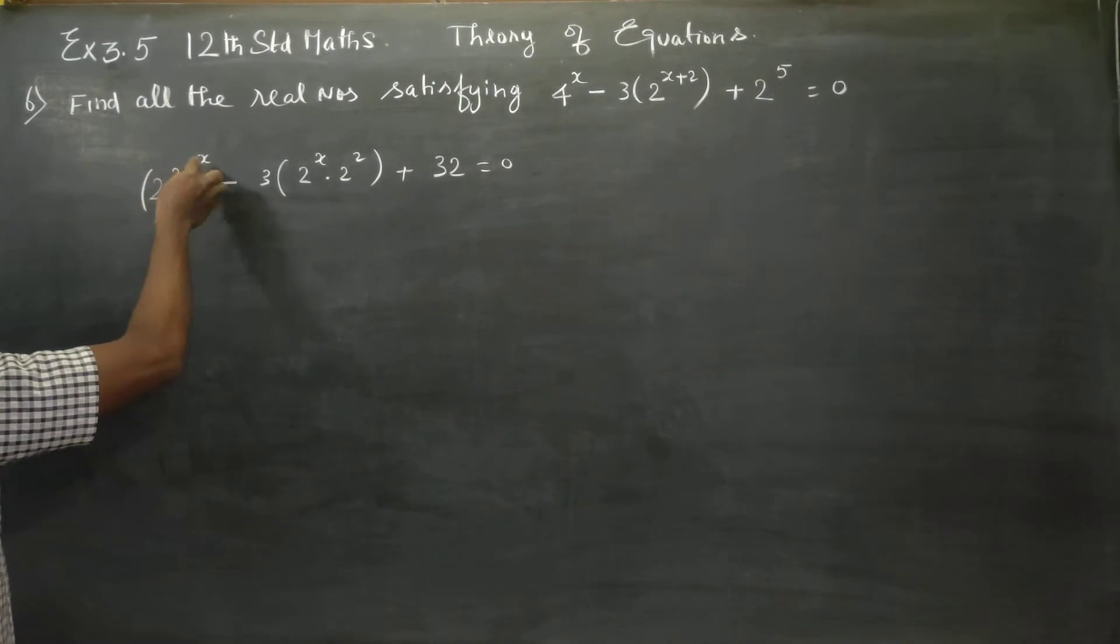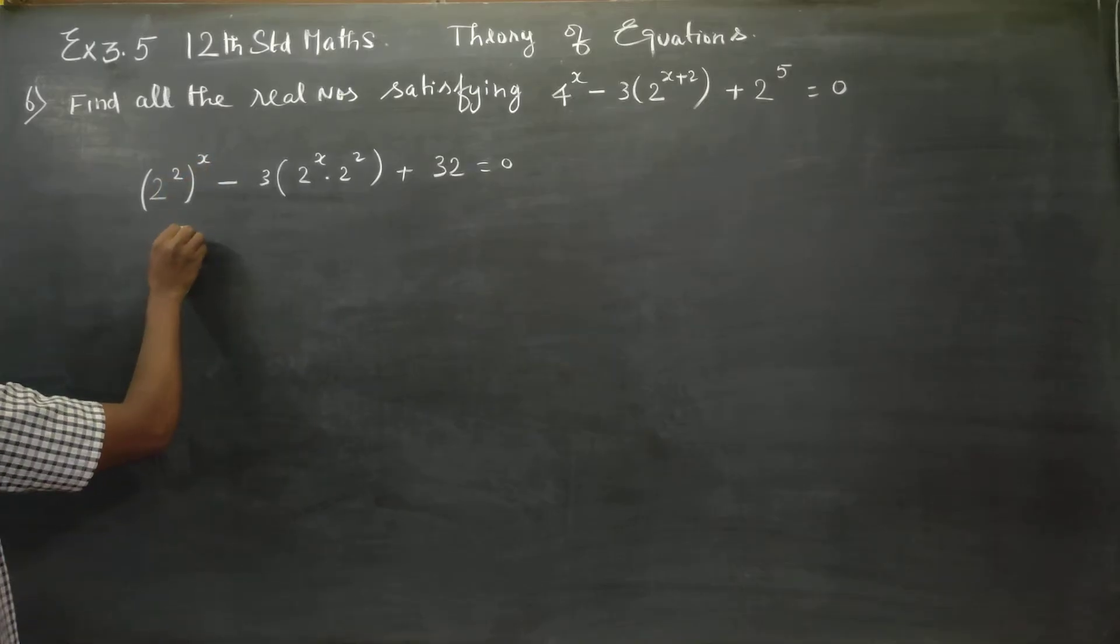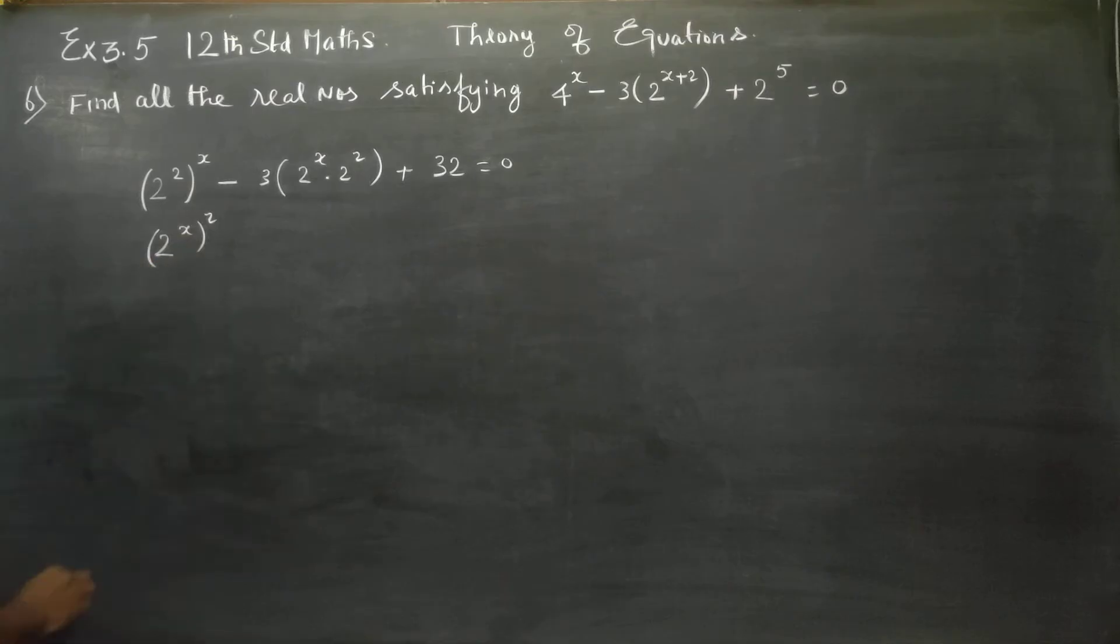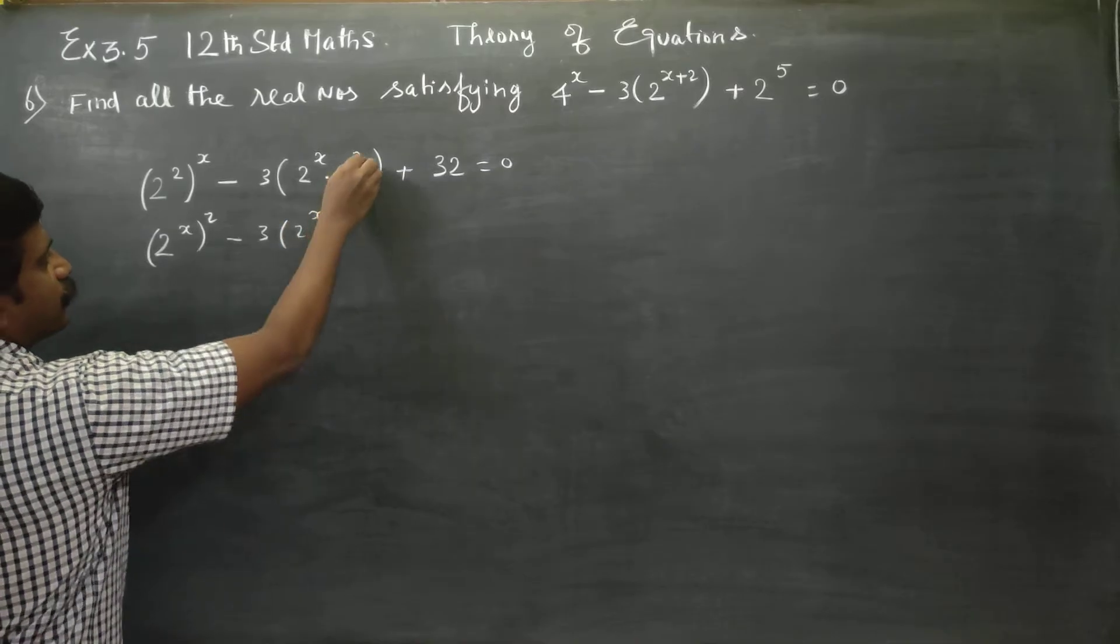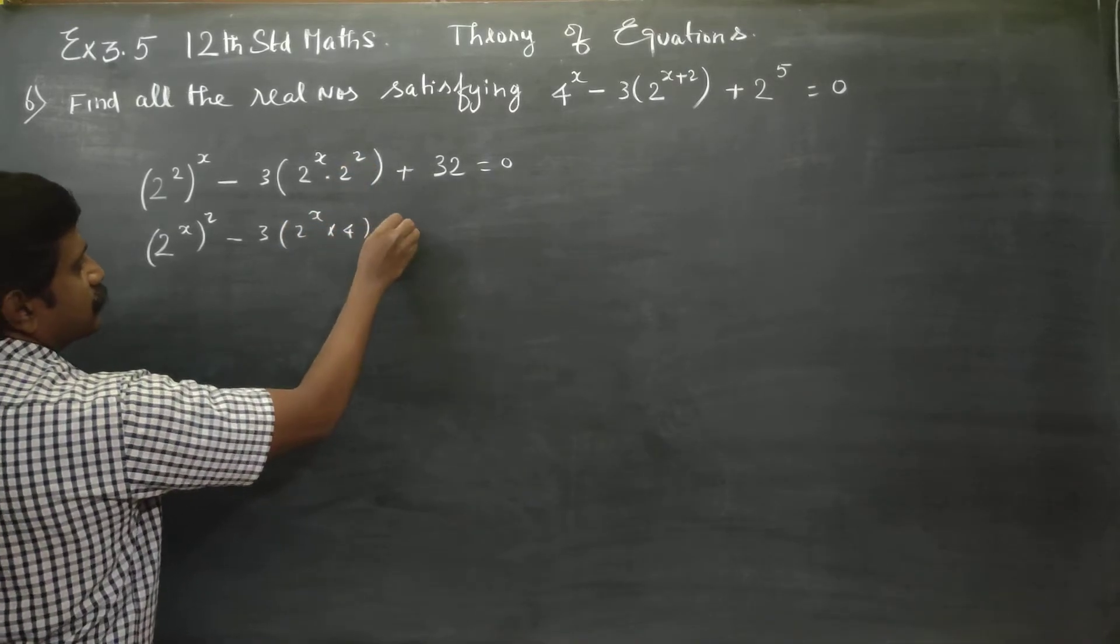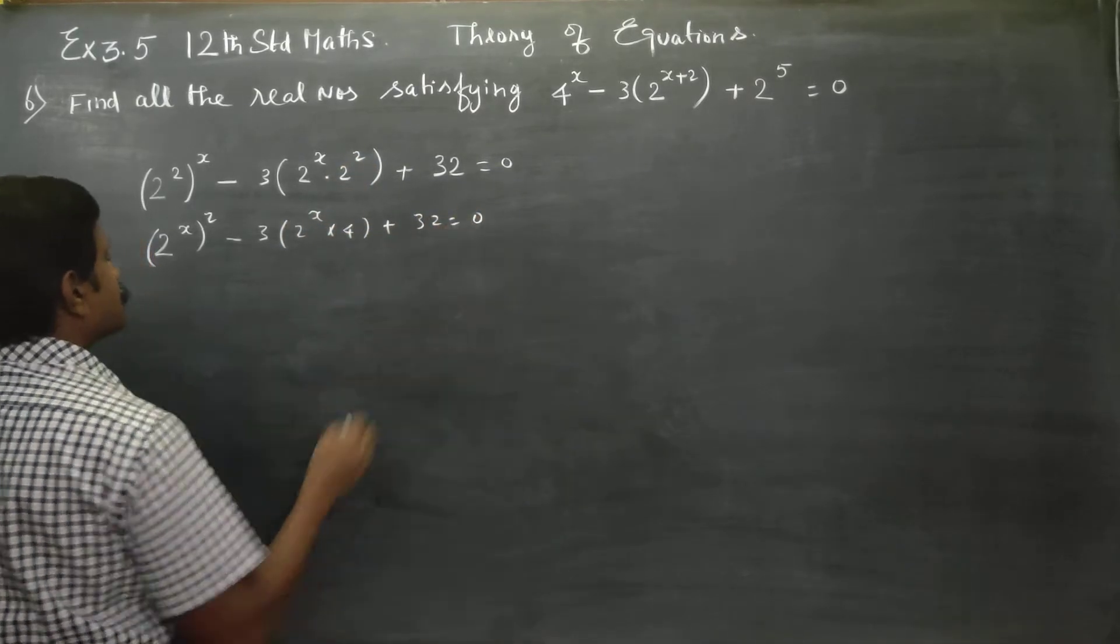This will be written as power multiply, giving 2^(2x). Then minus 3 times 2^x times 4, which is 12(2^x), plus 32 equals 0.